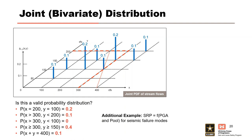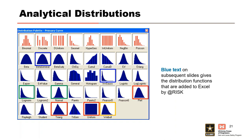There are a fair number of probability distributions available to describe random variables. Some of the more common types helpful during a risk assessment include: Triangular, Uniform, Normal, LogNormal, PERT, and Weibull. Other distributions such as the inverse Gaussian and beta general are also available for specific applications. The blue text on subsequent slides gives the syntax for defining distribution functions using the Excel add-on AtRisk. Once the common distributions and a couple other topics are introduced, we will get into the basics of using AtRisk.